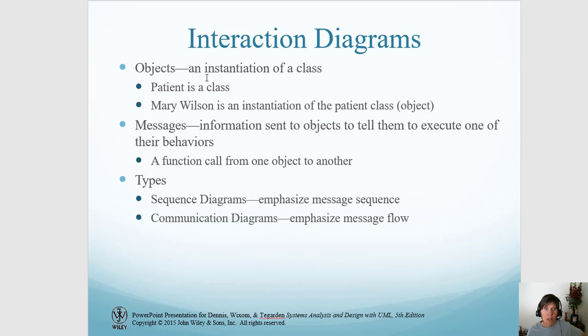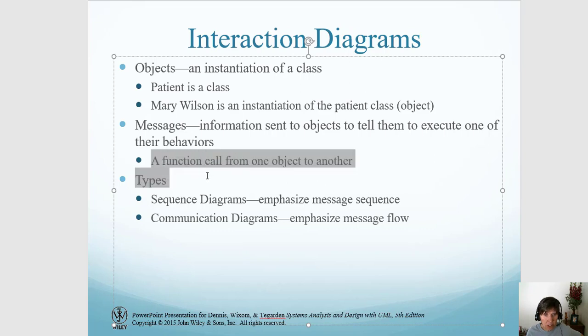We need to understand objects and we'll be using objects in the sequence diagram. Messages are information sent to objects to tell them to execute one of their behaviors. What this really is is a function call from one object to another. There are two different types of interaction diagrams: the sequence diagram and the communication diagram, and we're going to focus on the sequence diagram.